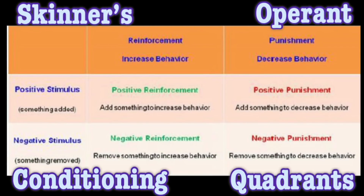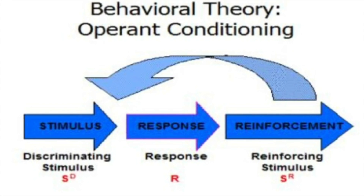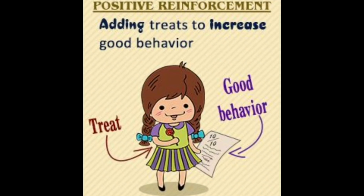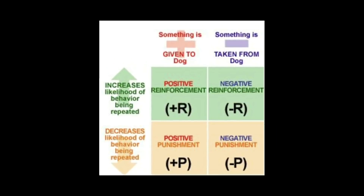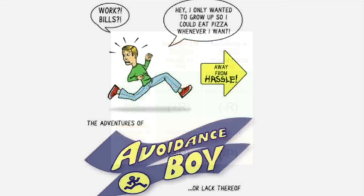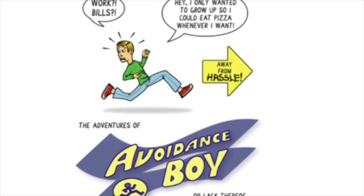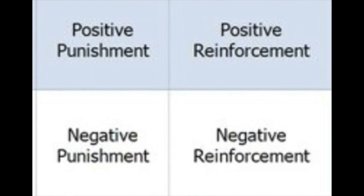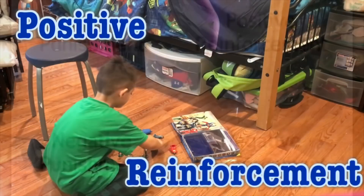Operant conditioning is the process of learning behavioral patterns based on certain stimuli from the environment, such that the external stimuli leads to a certain behavior. A human being knows the kind of consequences that a particular behavior will lead to, and therefore, to either encourage or discourage that consequence, he will behave in a particular way. Operant conditioning has four subparts: positive reinforcement, negative reinforcement, positive punishment, and negative punishment.